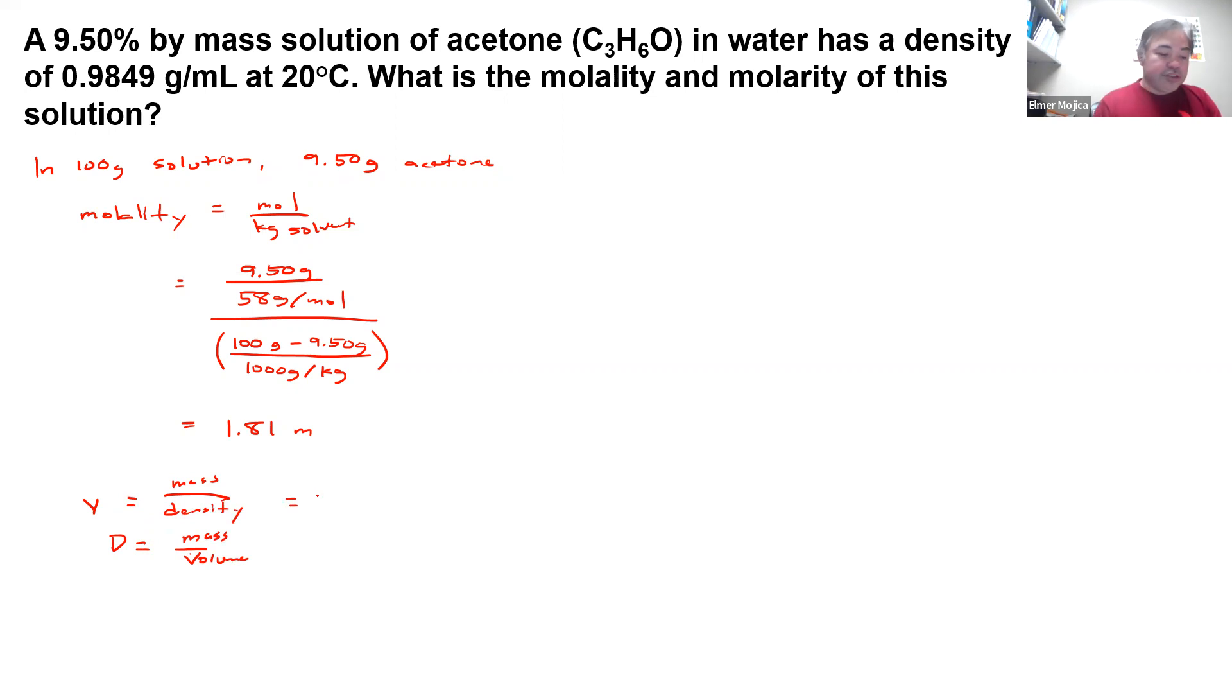The mass that you have, we could say 100 grams. And the density that you have there, based on this one, is 0.9849 grams per mL.